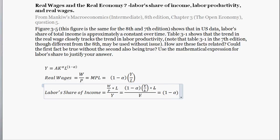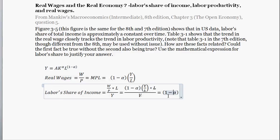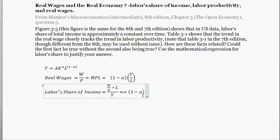What you're left with is 1 minus alpha. So assuming our simple production function is true — which in intermediate macro, let's just say it is — labor share of income is equal to 1 minus alpha.